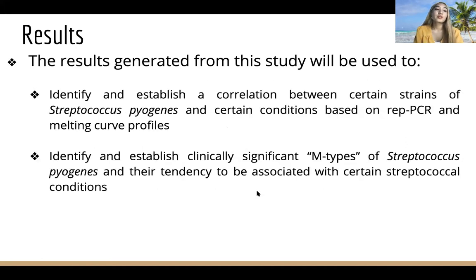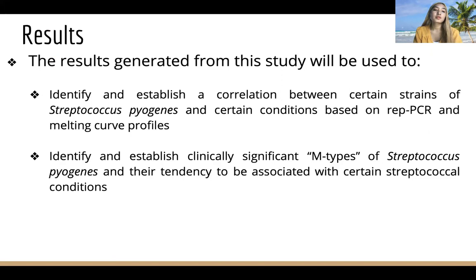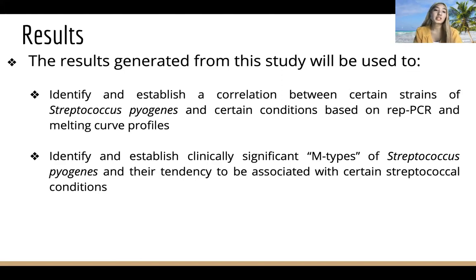The results generated from this study will be used to identify and establish correlations between certain strains of Streptococcus pyogenes and certain conditions based on real-time PCR and melt curve profiles, and to certify and establish clinically significant M-types of Streptococcus pyogenes and their tendency to be associated with certain conditions.